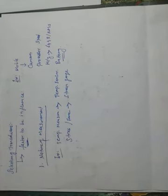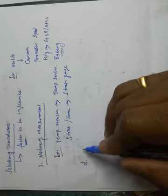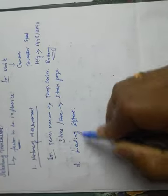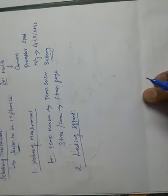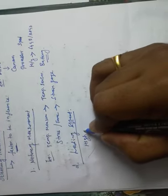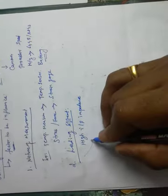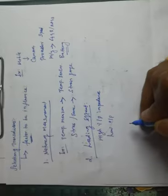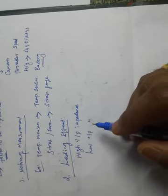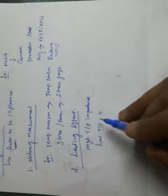The second parameter is loading effect. This is an important one. Loading effect means the transducer should have high input impedance and low output impedance. You have to select the transducer having high input impedance and the output having low impedance.